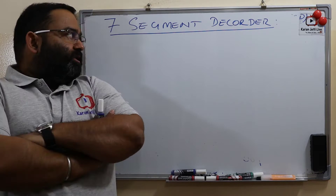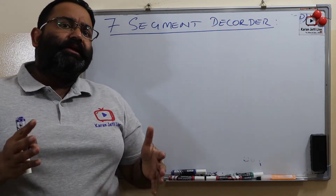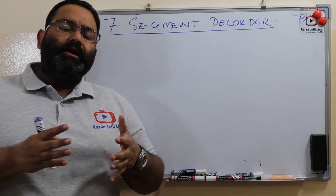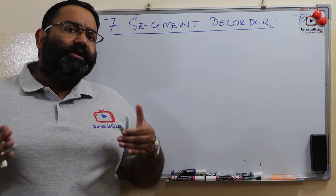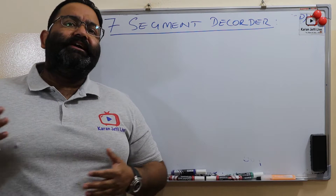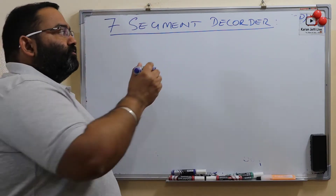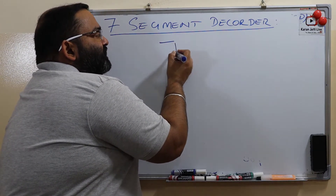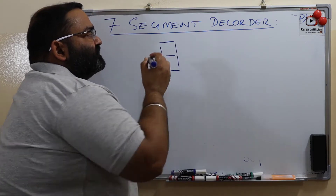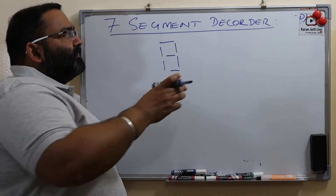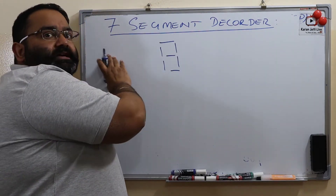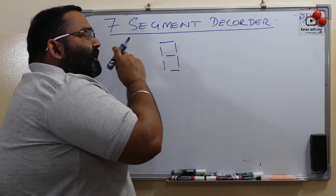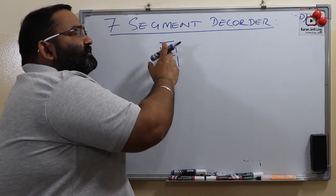The 7-segment decoders are used to display decimal numbers in your standard calculating devices. For example, if you see your calculator, a data bank, or a digital watch, they display decimal numbers using 7-segment displays. So the 7-segment decoder is used to decode a decimal number so that it can display the decimal number using this type of display. We call it a 7-segment display.